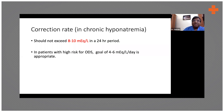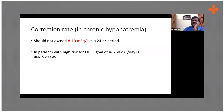For example, if sodium is 115, you would normally try to bring it up to 125 in 24 hours. But whenever the risk factors are present, you should be even more careful, trying to bring it up only to 120. Once sodium goes up to 120, the chances of neurological problems decrease and the symptoms get better.